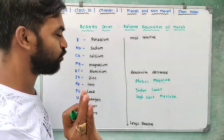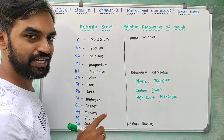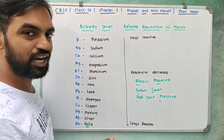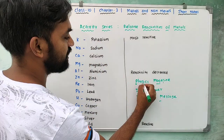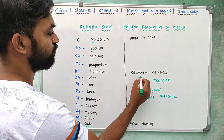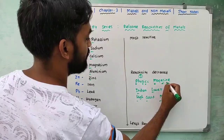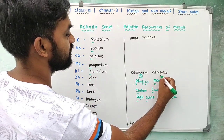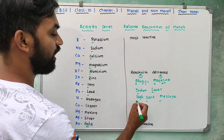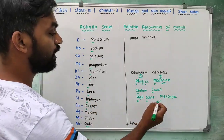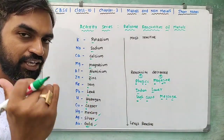A short trick to remember the activity series: 'Physics Magazine Indian Lawyer High Court Message' — where Physics = Potassium (K) and Sodium (Na), Magazine = Magnesium, Indian = Aluminum (Al) and Zinc (Zn), Lawyer = Lead, High = Hydrogen, Court = Copper, Message = Mercury, Silver, Gold.